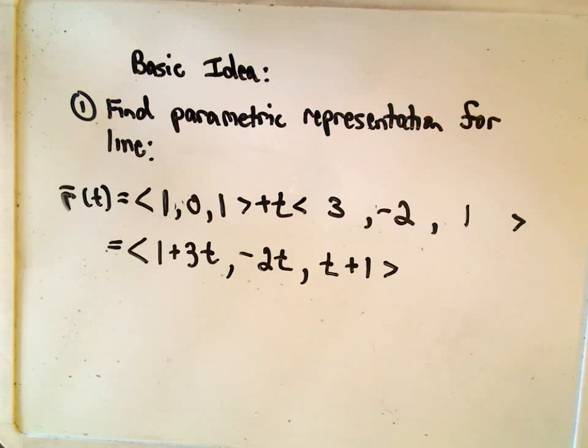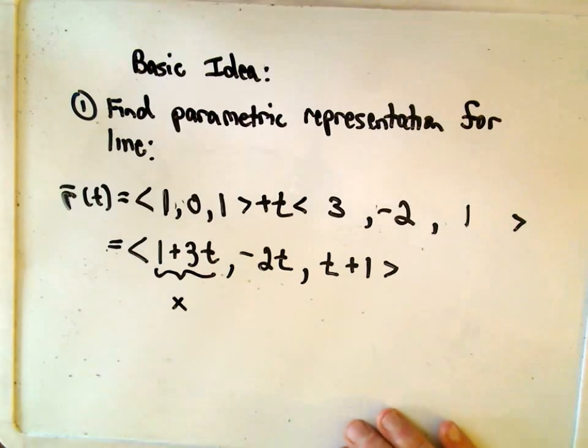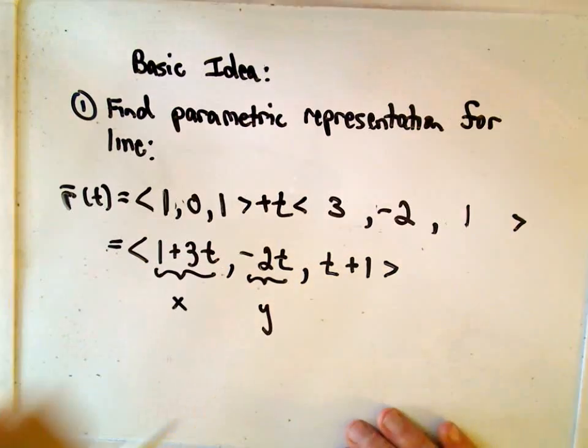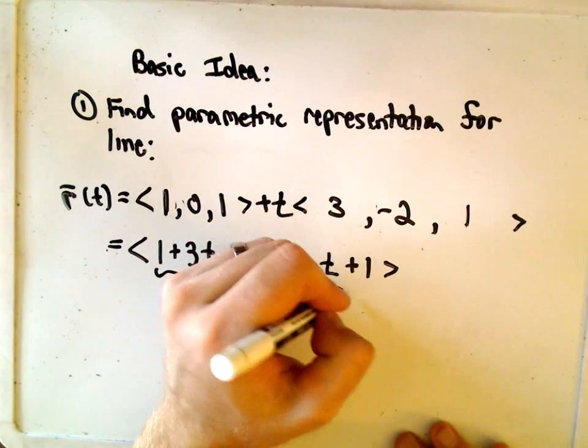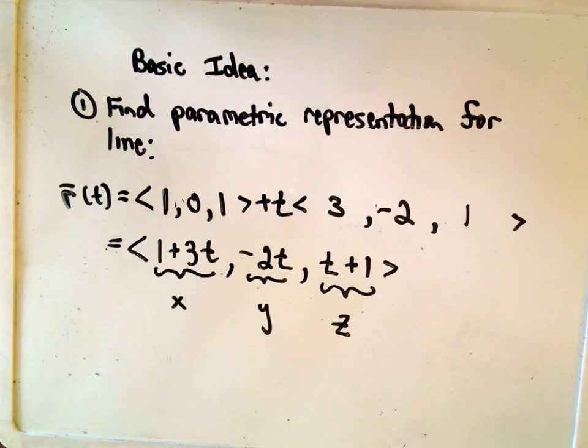So now we have our parametric representation of the line. And remember, the first part is a representation for the x-coordinate, the second part is a representation for the y-coordinate, and the third part is simply a representation for the z-coordinate.